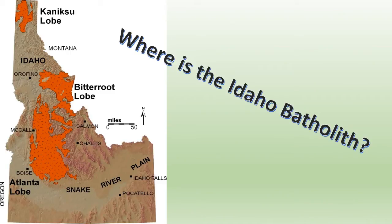The Idaho Batholith covers a large portion of western Idaho, all the way from Canada in the northern part of the state, and runs over 200 miles to the southern portion of the state and spans about 75 miles in width. There are three main lobes that create the batholith. The northern part of the state is the Knixu lobe. Moving southward to the next lobe, the Bitterroot lobe is the easternmost section of the batholith, and the Atlanta lobe makes up the southernmost section.